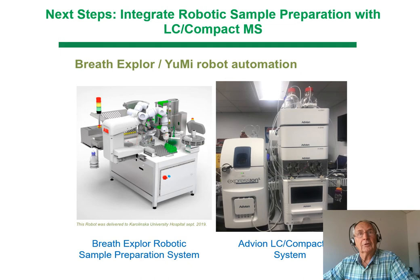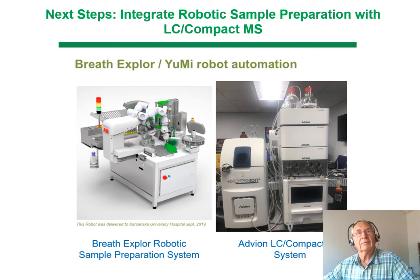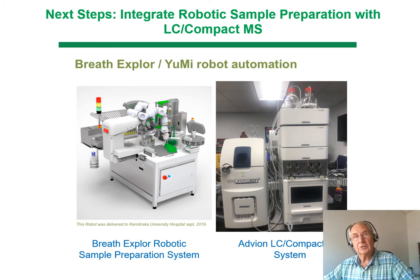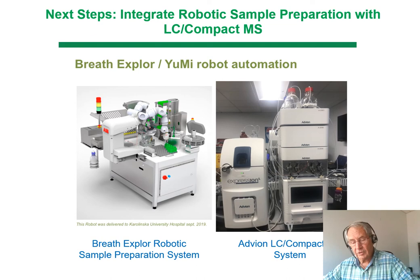The next steps would be to use a robot for sample preparation, which was not done in this work — sample preparation was done by hand in the laboratory. In a mobile laboratory, a robot would be very handy. Such a robot does exist and has been available for several years from a Swedish company called Breath Explorer; they have a sample preparation system for these breath collection devices that reads the barcode and handles everything needed. Combined with the Advion mass spectrometer LC-MS system — the HPLC system and compact mass spectrometer — that could be a working system in a mobile laboratory capable of less than 10-minute sample preparation and analysis for on-site screening.